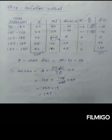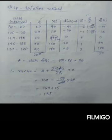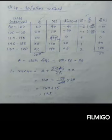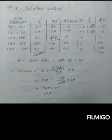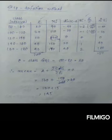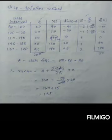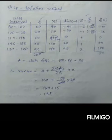Now I'll show the step deviation method on the same Example 3. The formula is: A plus (summation fi·ui divided by summation fi) multiplied by c. We need fi·ui and c. The class size c: interval 80 to 100 gives a gap of 20, so c equals 20. We make five columns: class interval, fi (given), xi (class mark), di (xi minus A), and ui (di divided by c). The middle value of the xi column is 130, so A equals 130.